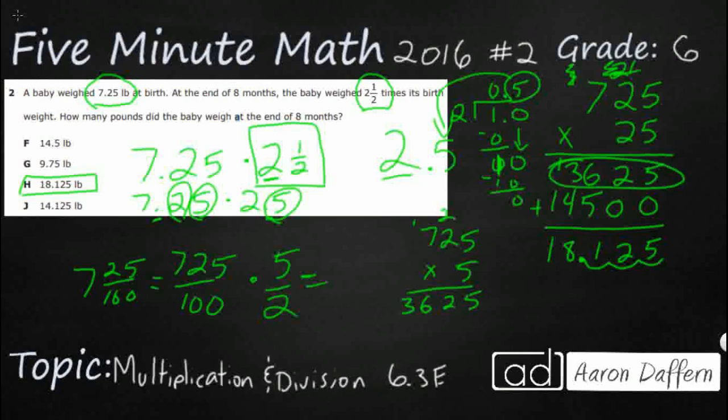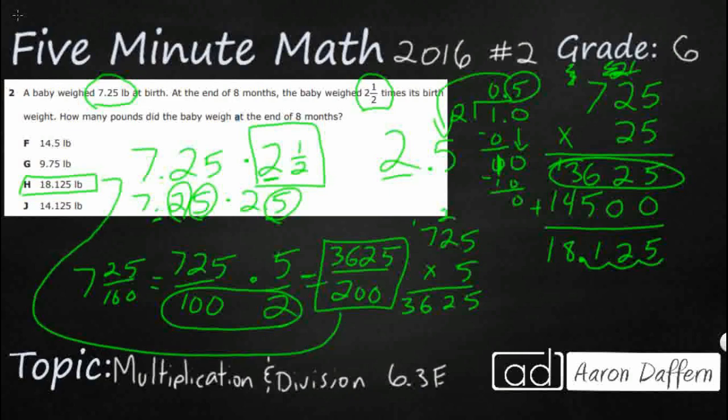And we already did that up here. It's 3625. So this is 3625 over 2 times 100 is 200. So this, 3625 over 200. You can make that into a mixed number. And guess what you're going to get? You are going to get this 18.125. So usually it's easier just to use the decimals rather than having to convert back from an improper fraction to a mixed number.